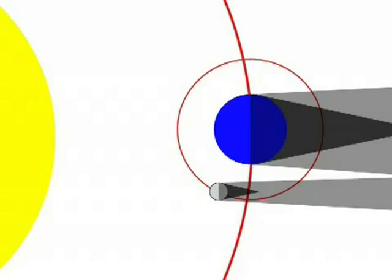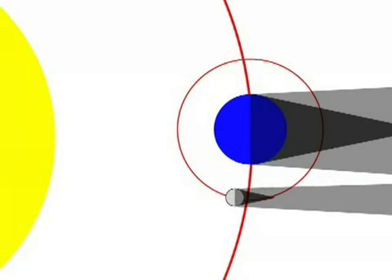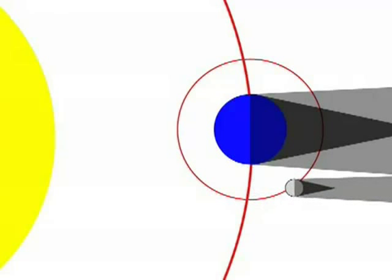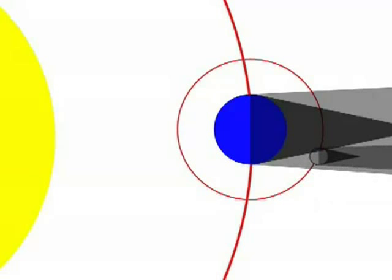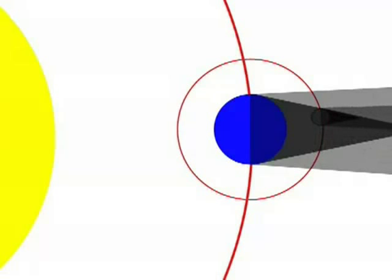A lunar eclipse is what we see when the full moon moves into the Earth's shadow. Since the Earth's shadow is so large, it can blot out the entire moon for as much as half an hour. A lunar eclipse can be seen by anyone on Earth who has a clear view of the moon during the period of darkness.